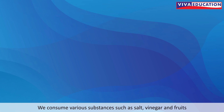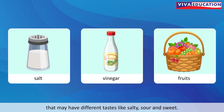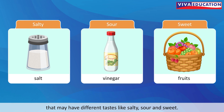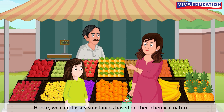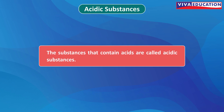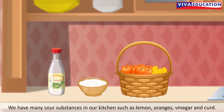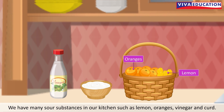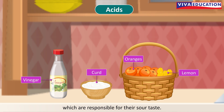We consume various substances such as salt, vinegar and fruits that may have different tastes like salty, sour and sweet. These substances have different tastes because their chemical nature is different. Hence, we can classify substances based on their chemical nature. The substances that contain acids are called acidic substances. Acids are sour in taste. We have many sour substances in our kitchen such as lemon, oranges, vinegar and curd. These substances contain natural acids which are responsible for their sour taste.